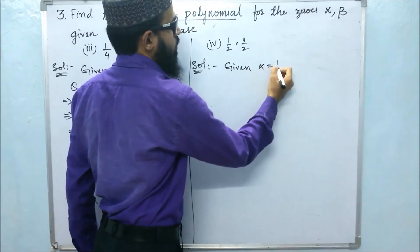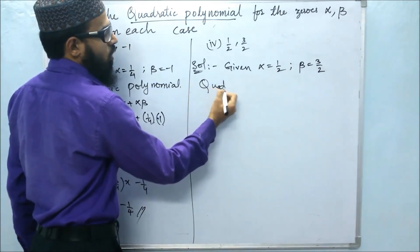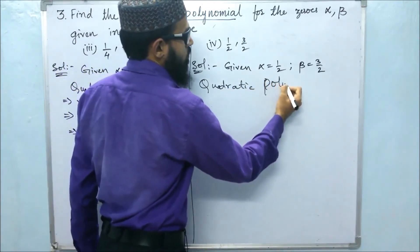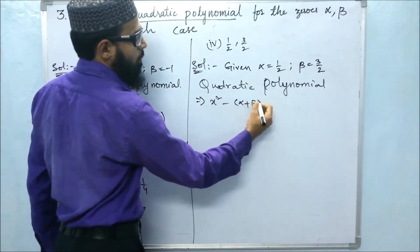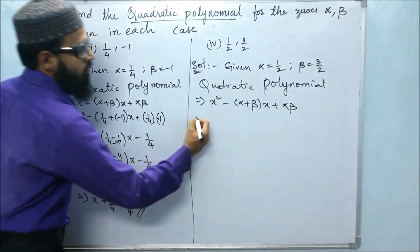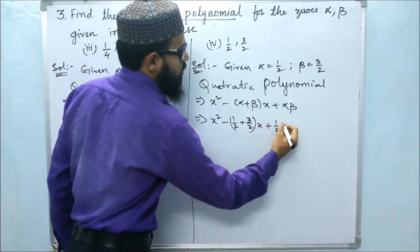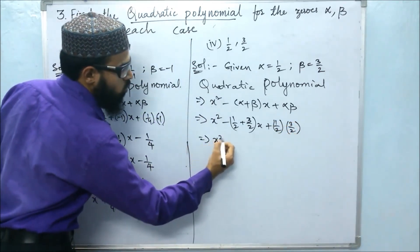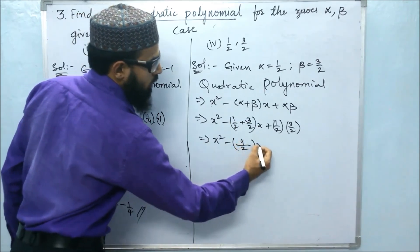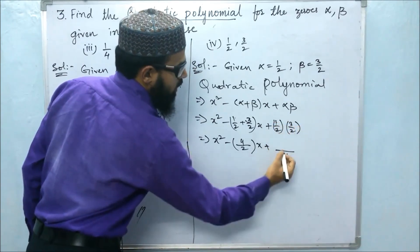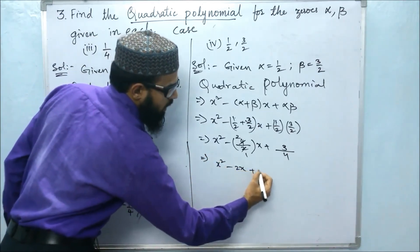Given: alpha is 1 by 2 and beta is 3 by 2. The formula of the quadratic polynomial is x squared minus (alpha plus beta) into x plus alpha beta. So: x squared minus (1 by 2 plus 3 by 2) x plus (1 by 2 into 3 by 2). Since the denominator 2 is the same for both, 1 plus 3 is 4 over 2, giving 2. And 1 by 2 into 3 by 2 gives 3 by 4. Therefore, the required polynomial is x squared minus 2x plus 3 by 4.